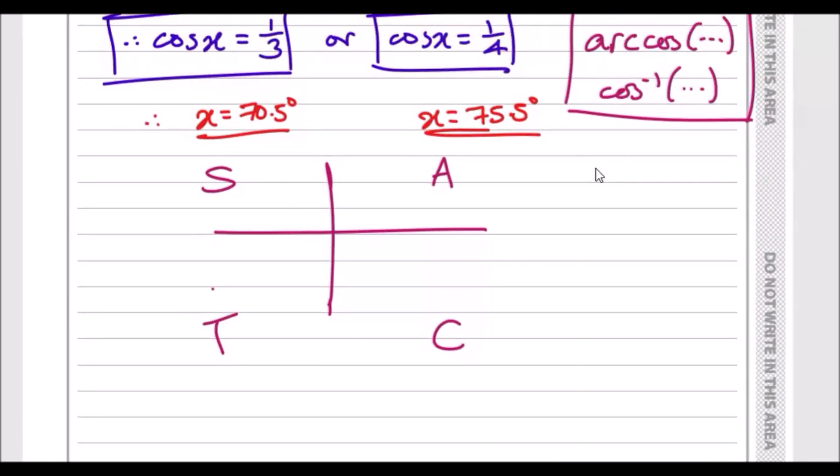Because we worked with cos, we can draw the CAST diagram which is C-A-S-T, always in this order. Because we're using cos, this means we're going to use C, and because it's a positive result we're going to use A, because A always means all and all means positive.